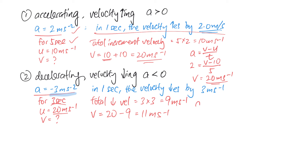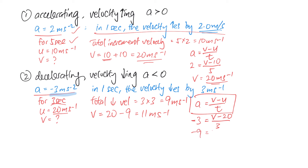Applying the acceleration formula a = (v − u) / t — note that for this situation the car is undergoing constant deceleration or negative acceleration, so it's very important to remember to put the negative sign. The acceleration is −3, the final speed v is what we want to find, the initial speed u is 20, and the time taken is 3 seconds. Solving gives minus 9 = v minus 20, so the final speed is 11 meters per second.